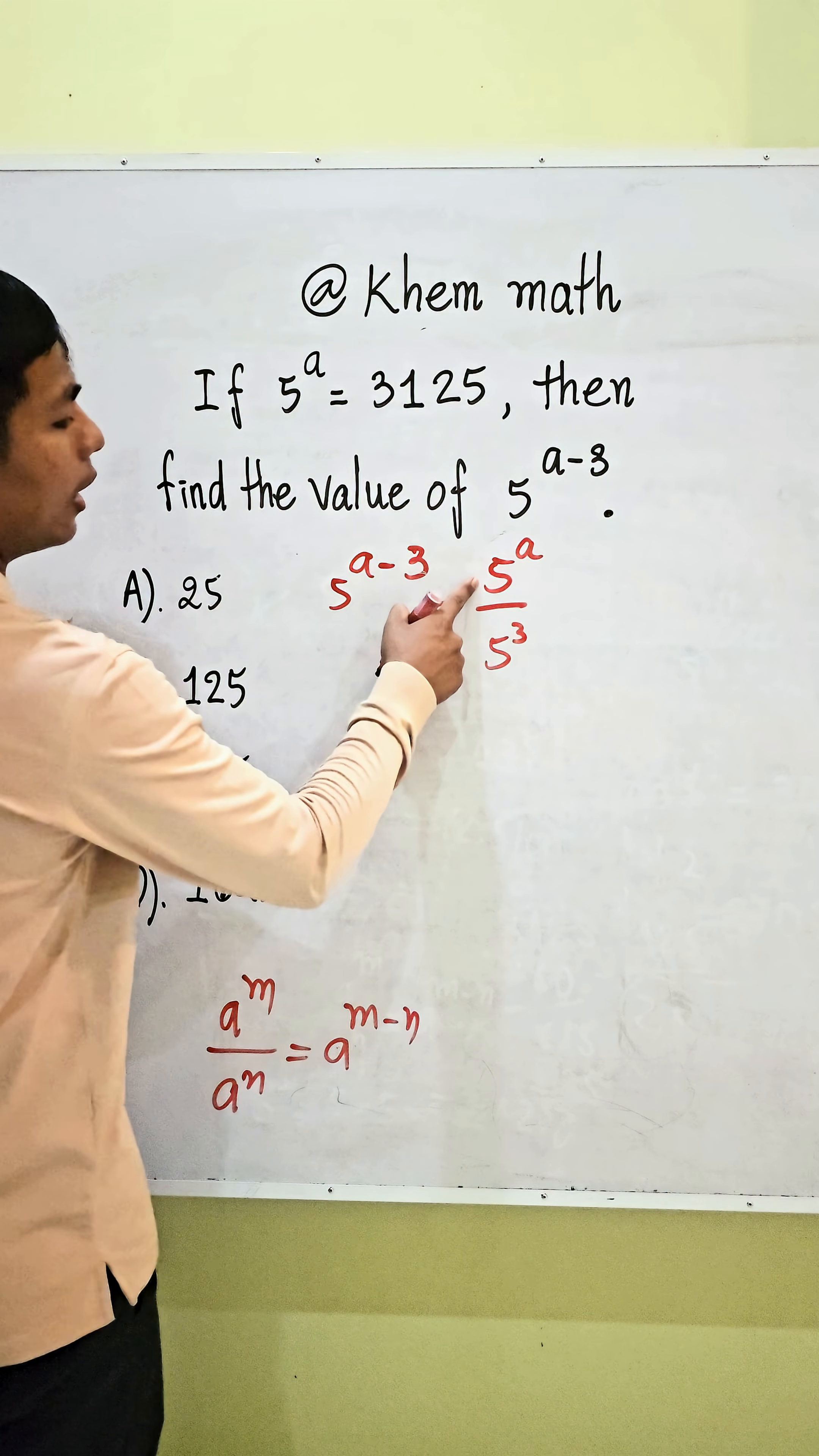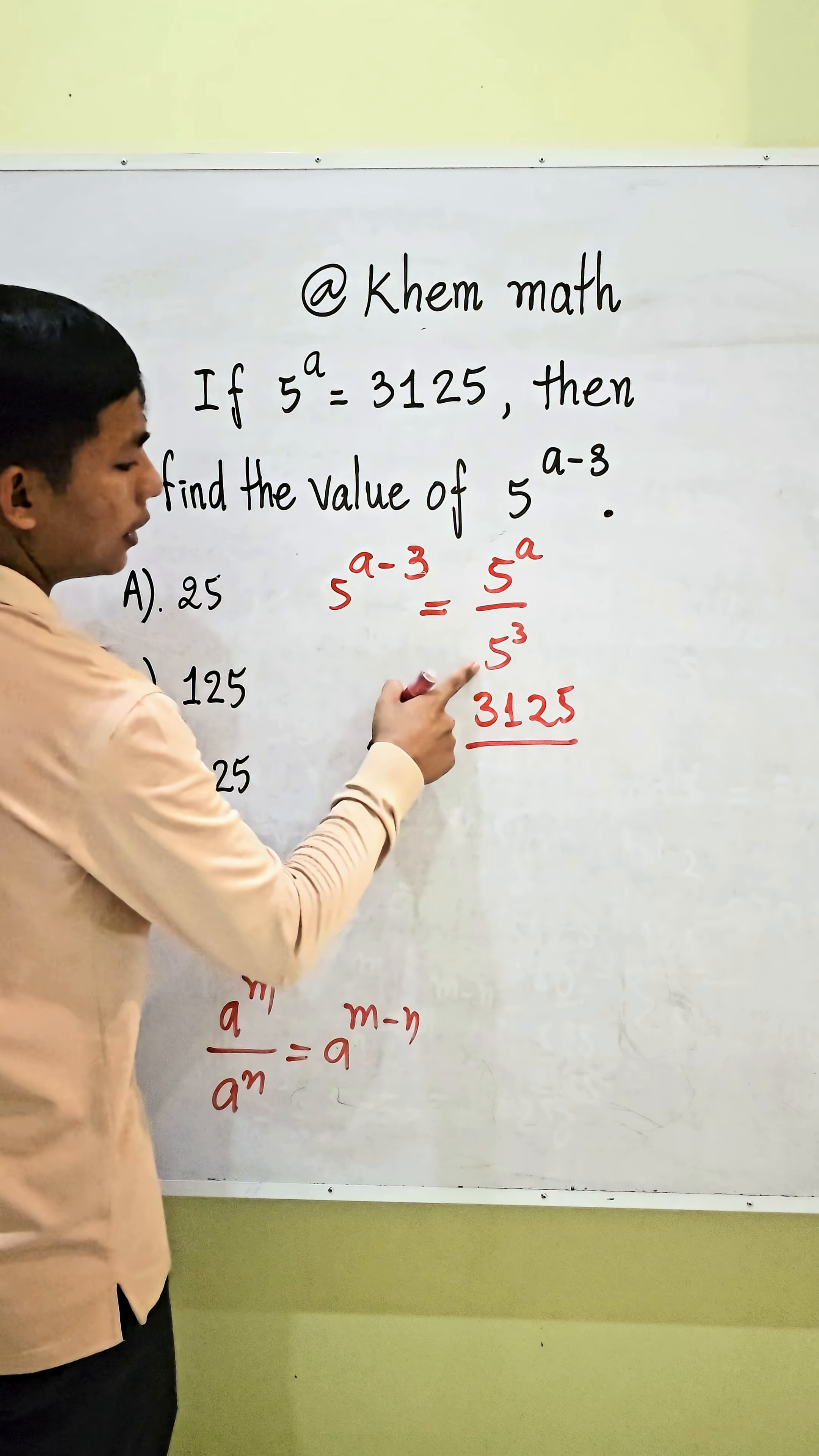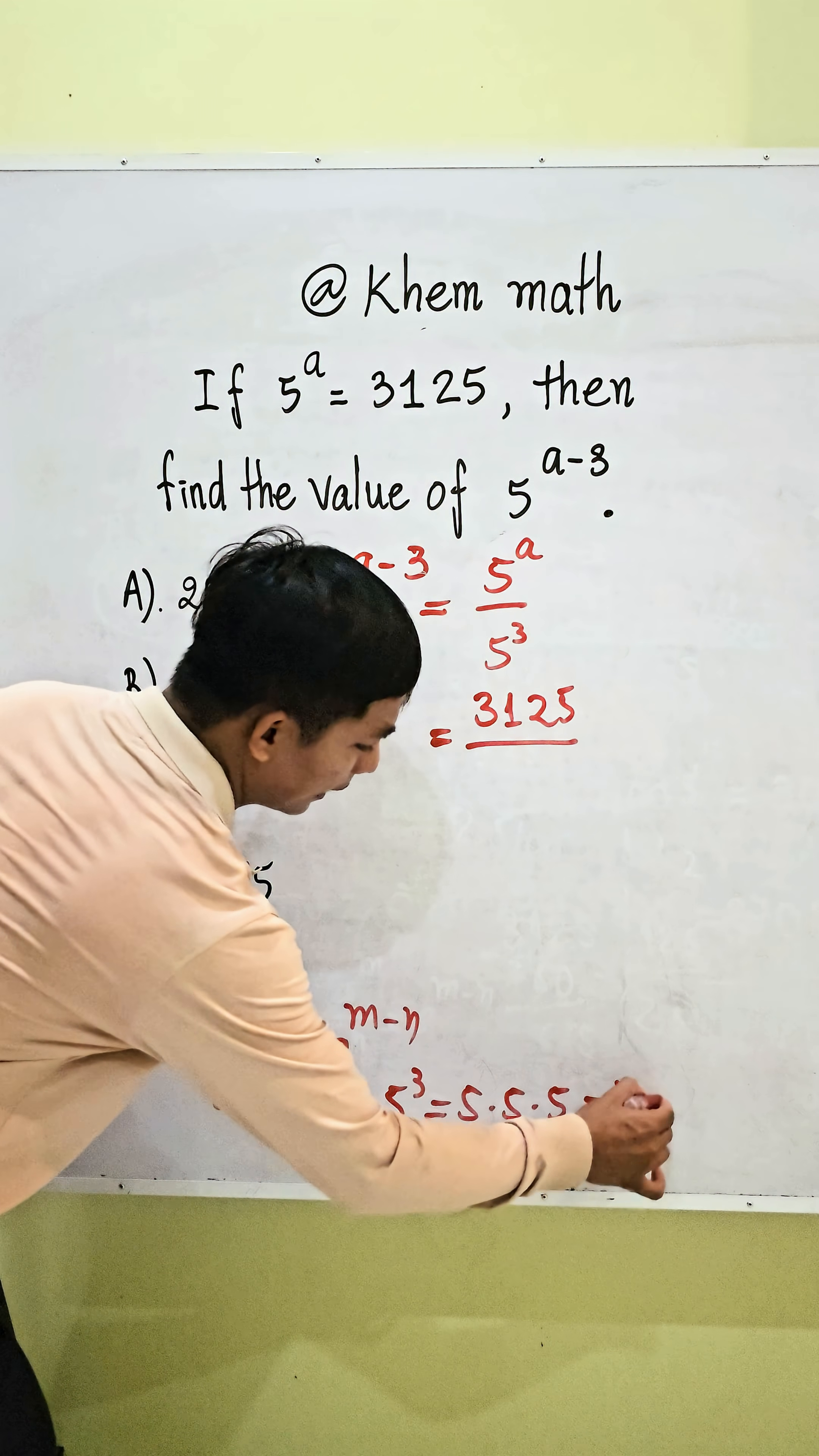And here 5 power A equals 3,125. So we have 3,125 divided by 5 power 3. 5 power 3 equals 5 times 5 times 5, and 5 times 5 times 5 equals 125.